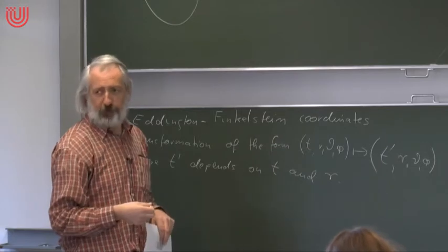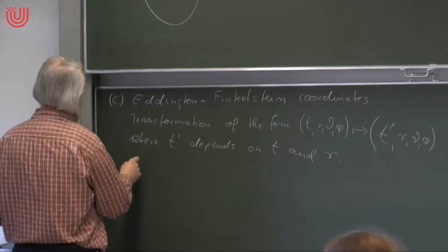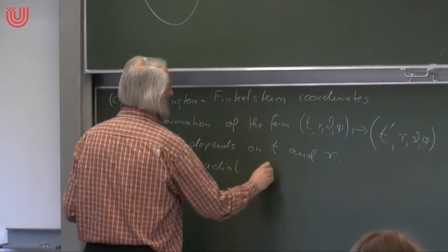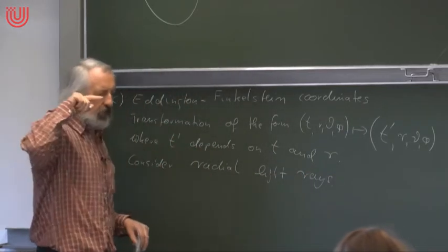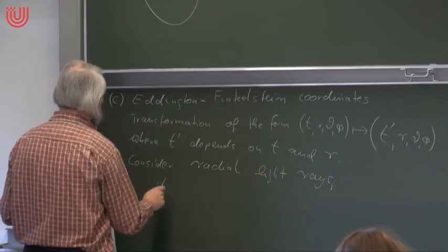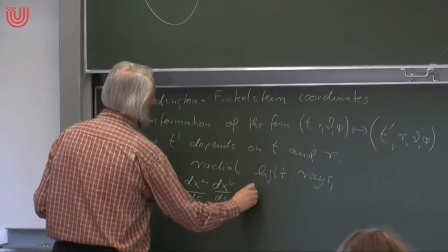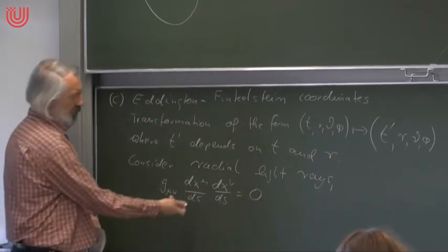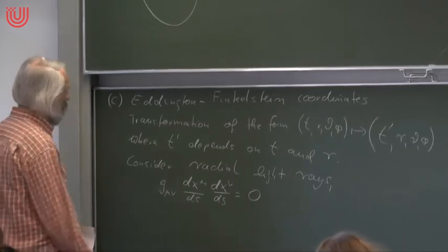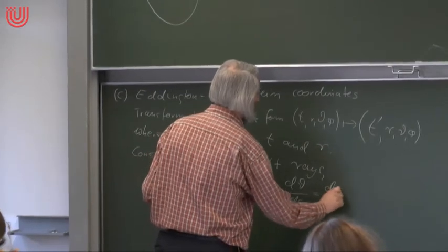The idea is to map ingoing or outgoing light rays onto straight lines. To do this we first calculate the ingoing and outgoing light rays. We consider radial light rays — curves with theta and phi constant, satisfying g_μν (dx^μ/ds)(dx^ν/ds) = 0 (lightlike condition), with dθ/ds = dφ/ds = 0. Here s is an affine parameter along the null geodesic, since proper time is not meaningful along light rays.